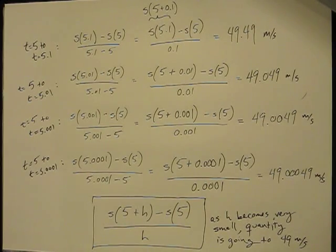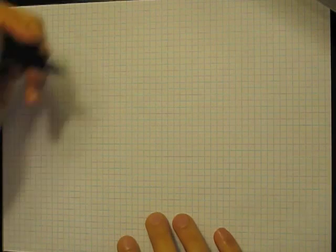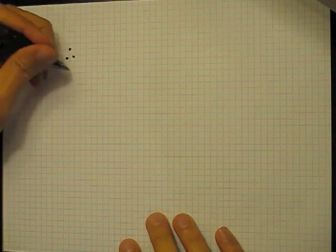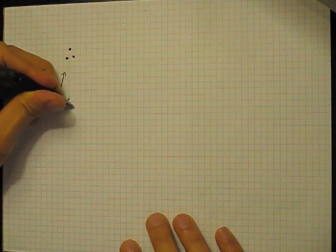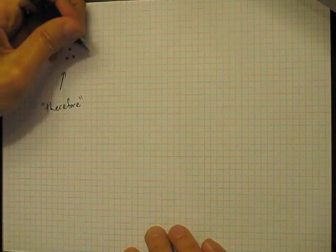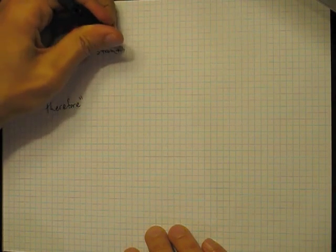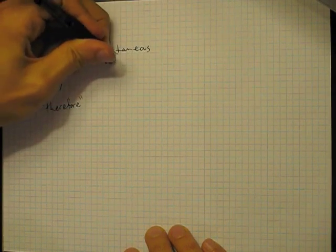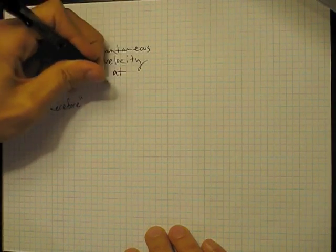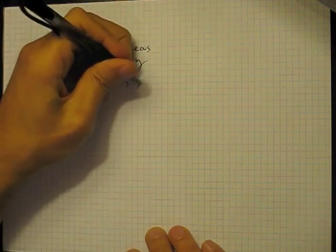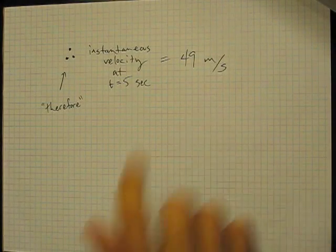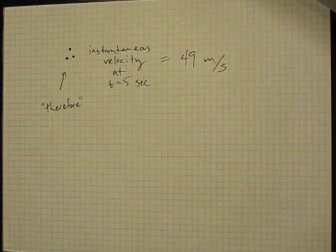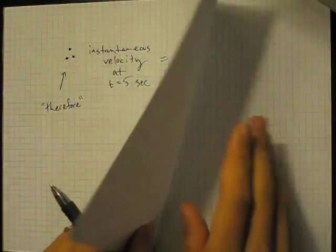So that's 49 meters per second. And so this is our answer to the instantaneous velocity. So maybe I'll write that down. So therefore, by the way, this is the symbol for therefore. It's a logical symbol. I use it a lot. It makes writing a little bit easier. Therefore, the instantaneous velocity at time equals 5 seconds is 49 meters per second. So this is how fast it's going right at that moment. Now I want to, so that's the velocity problem. I want to take a look at a generalization of this problem.